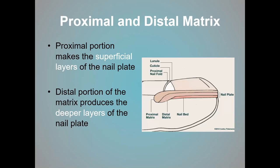There are two different parts of the matrix: a proximal part and a distal part, each responsible for producing a different layer of the nail plate. The distal matrix produces the deep portion of the nail plate, while the proximal matrix produces the superficial portion. Nail plate deformities can therefore be superficial, deep, or both. If there's damage to the proximal portion of the nail matrix, the superficial portion of the nail plate is affected — often seen as pitting of the nails. The same applies to the distal matrix and the deep nail plate.